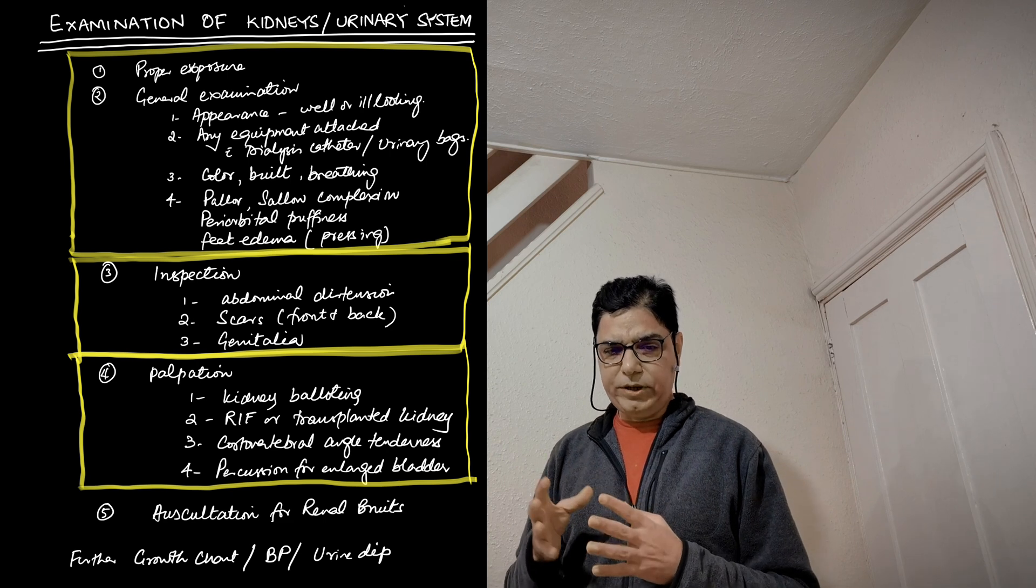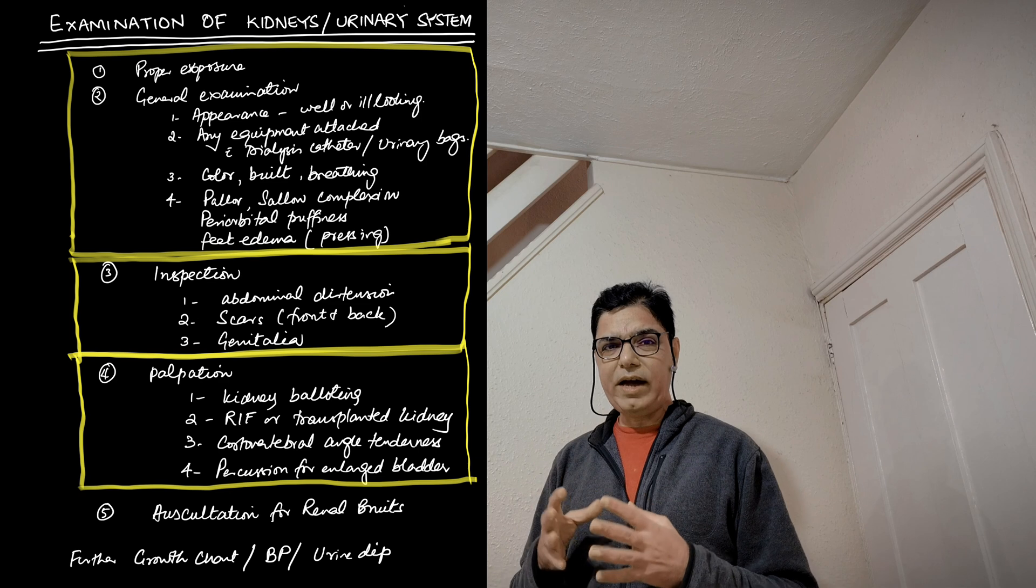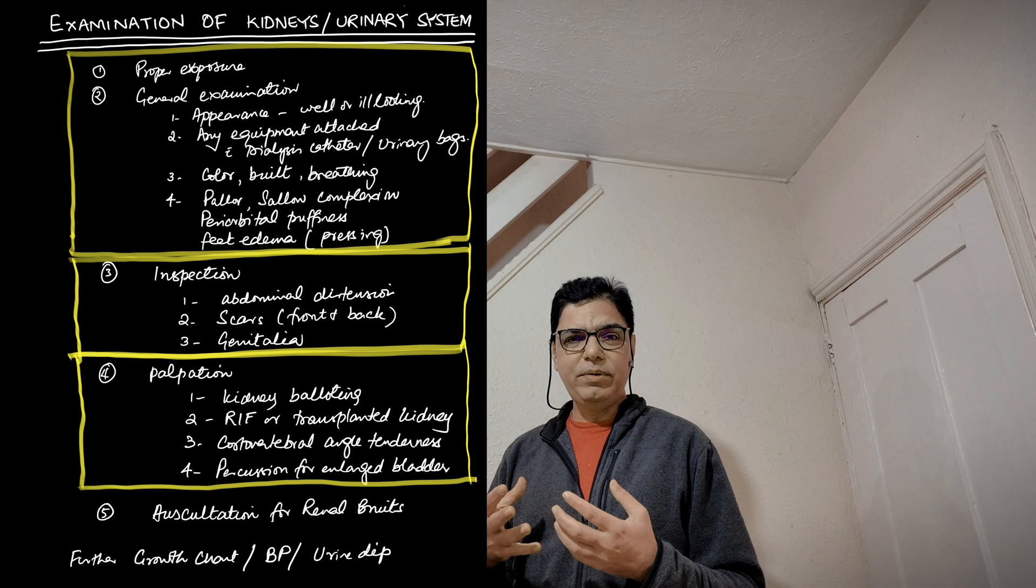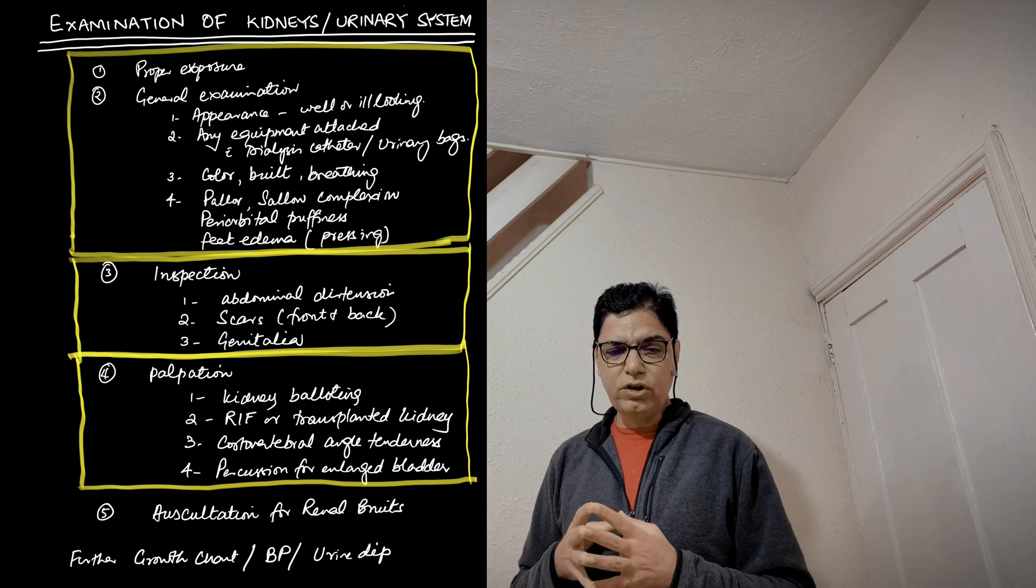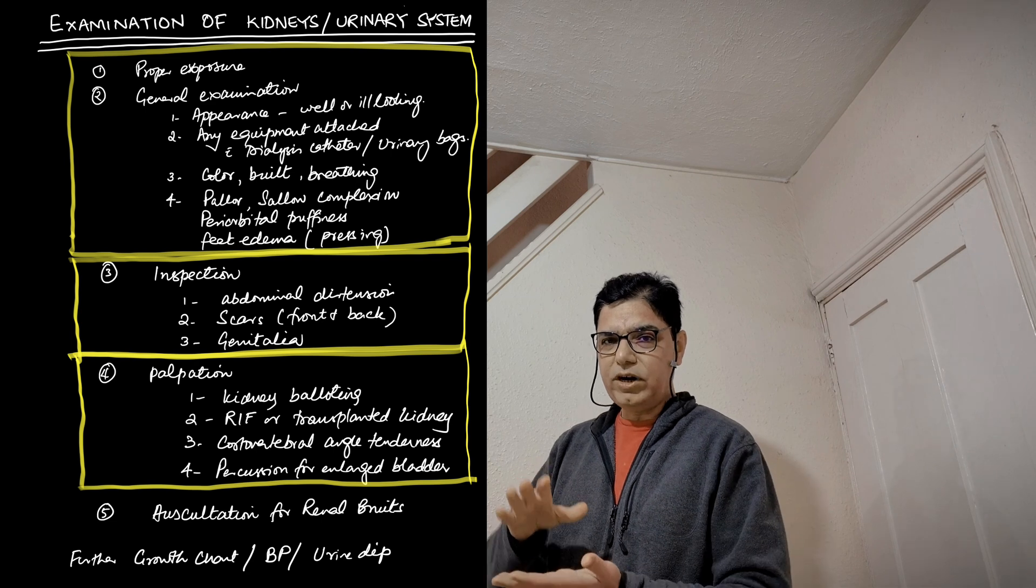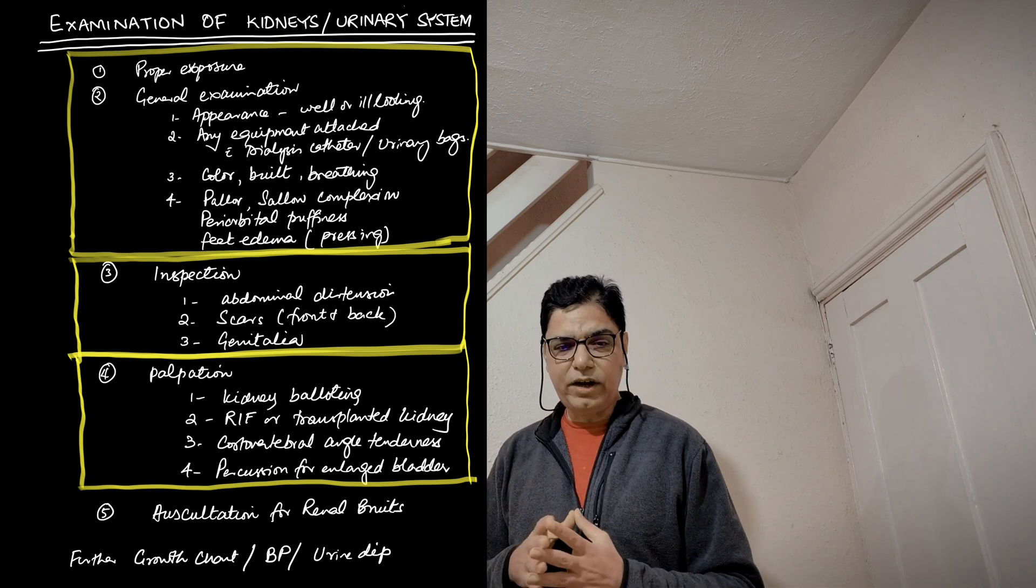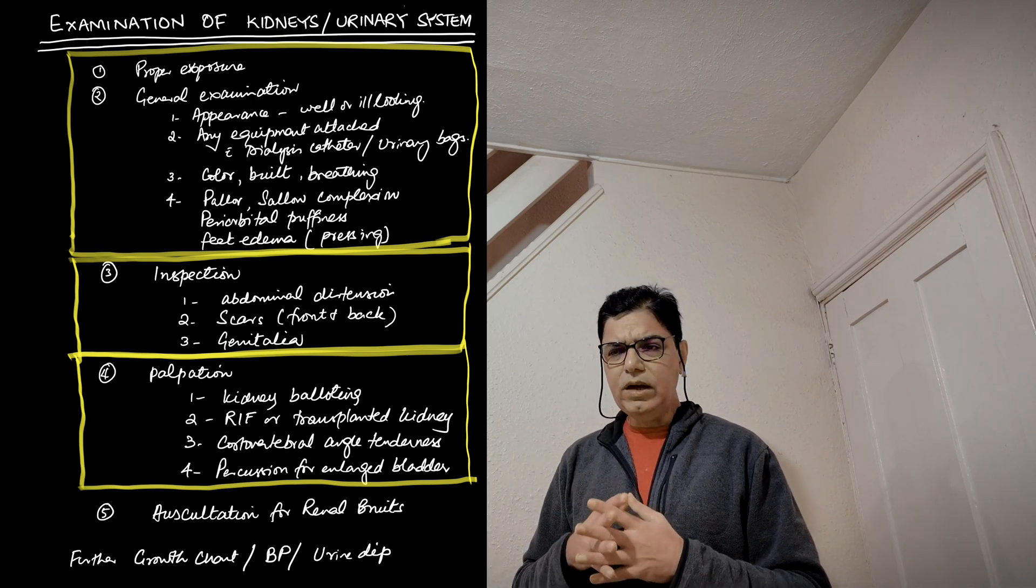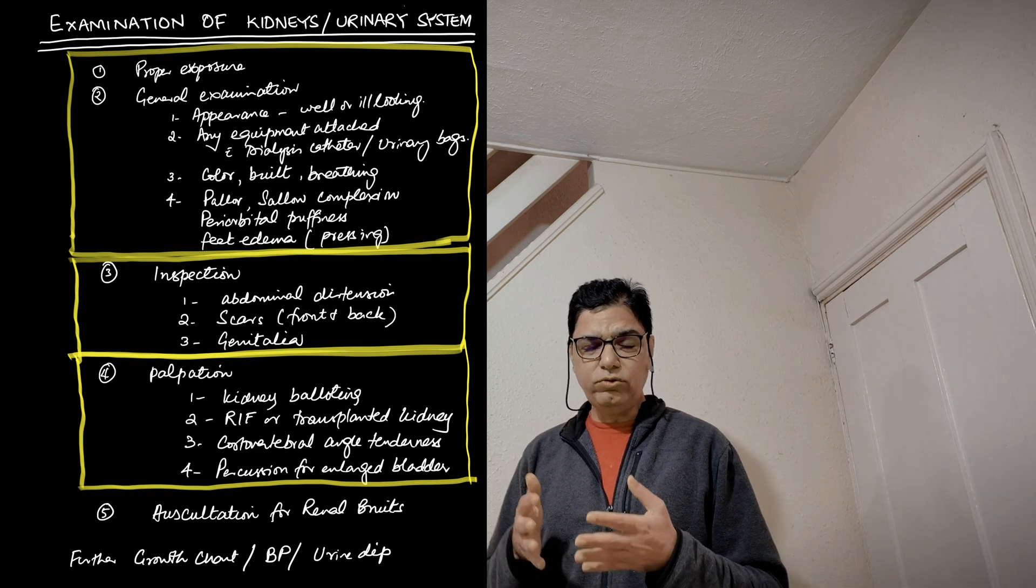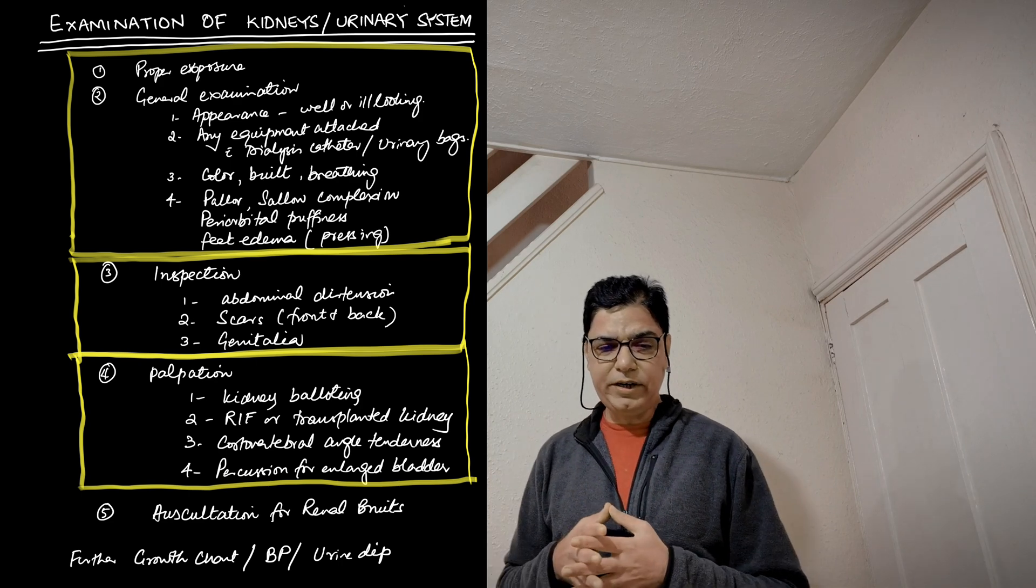Then the next step is to do palpation. In palpation, you would palpate the abdomen. You palpate for any masses, if you can feel any sort of masses which might be rising of kidneys or might be rising from any other abdominal structures. You also check for kidney palpating. You put your hands at the back of the child and from the front you just push it down and you see if you can palpate the kidneys on either side or not. You also have to examine the right iliac fossa in case of a child who has got nephrectomy scars to see if you can feel for a transplanted kidney, which is usually transplanted in the right iliac fossa.